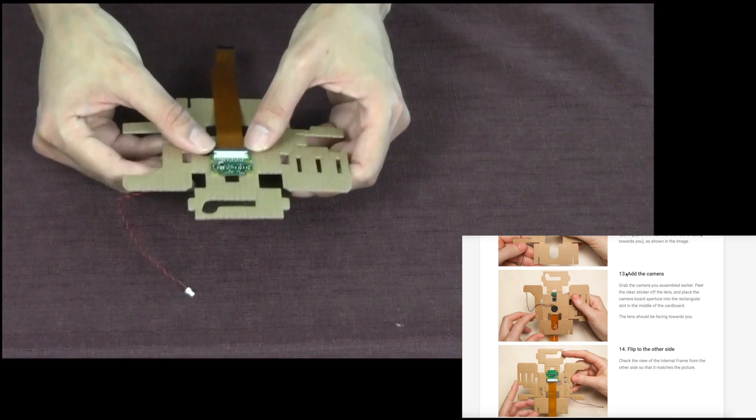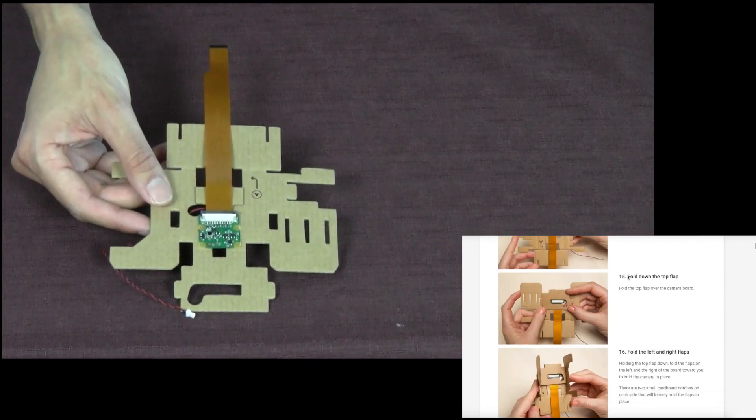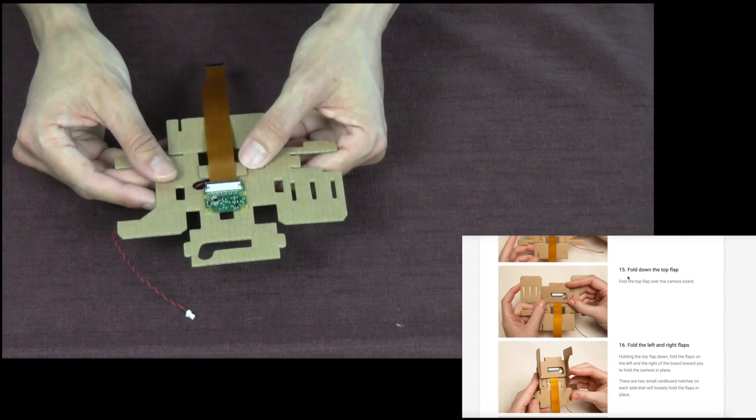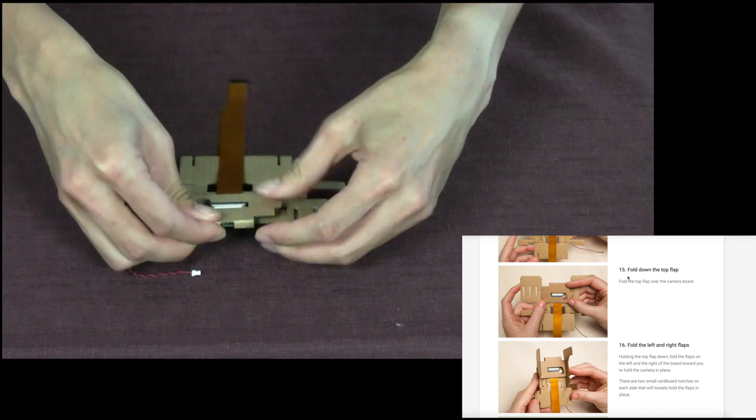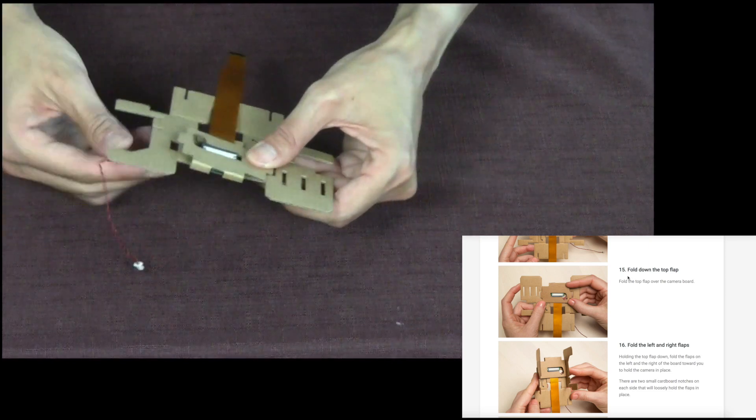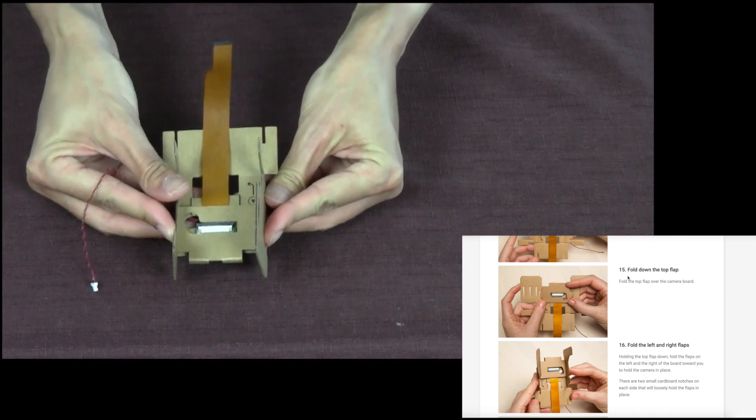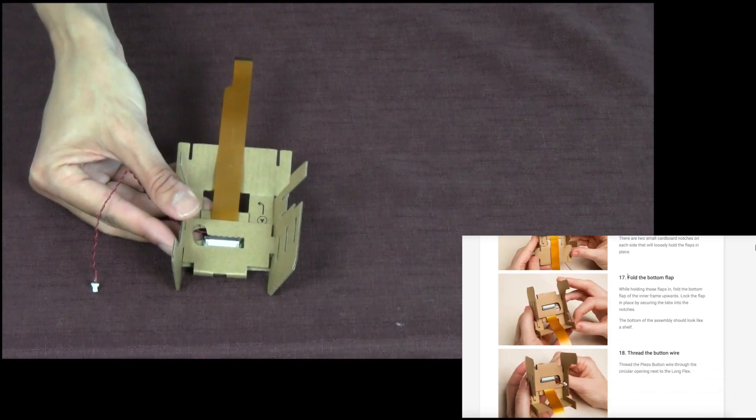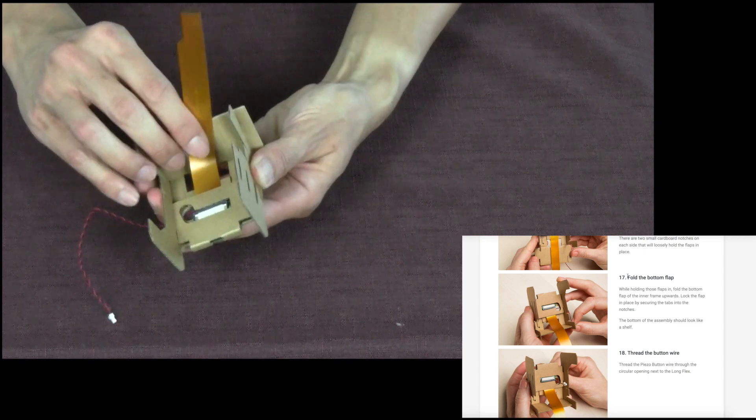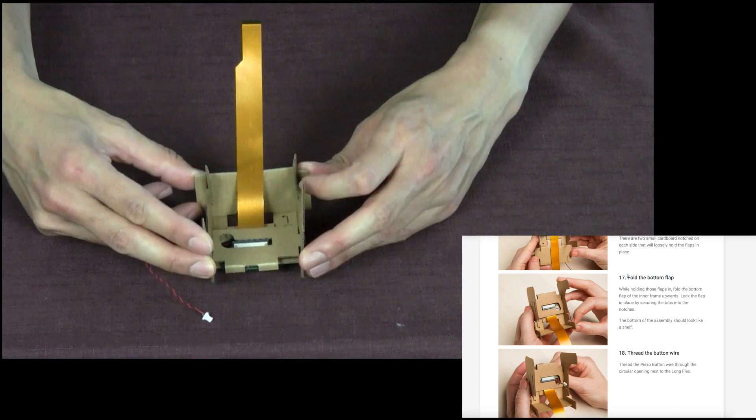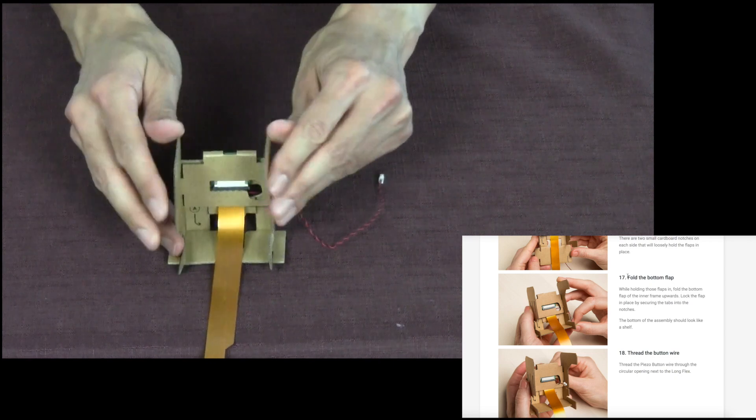And then flip on the other side. So now we're going to fold down the top flap and fold the left and right flaps and fold the bottom flap. I sense a theme here. And here it is. It looks like a little shelf now. That's what they said. It should look like a little shelf.